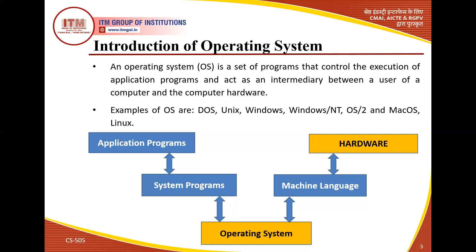Data security is an important invention. In Linux, like in Windows, multiple versions are available. Windows versions include Windows NT, Windows Professional, Windows 13, Windows 16, and many more. Linux also has different versions such as Red Hat, Fedora, and others — all are advanced versions of Linux.